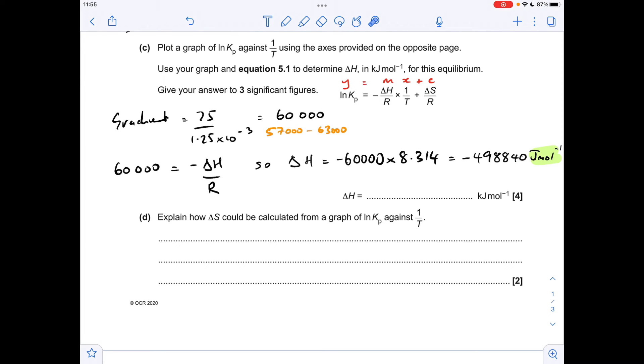It was mentioned in the question information that the units of delta H are joules per mole, but the final answer needs to be in kilojoules per mole and to three significant figures. So we just need to divide this by 1,000 and then put it into three significant figures. So that means my final answer would need to be minus 499 kilojoules per mole.